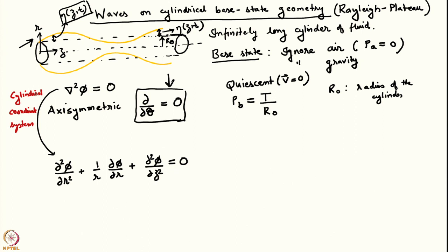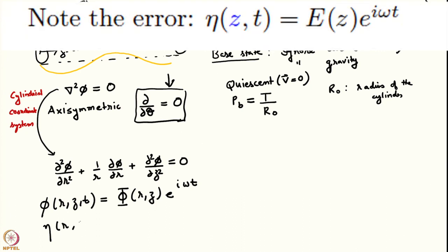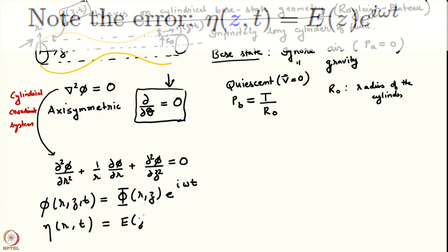We will solve the Laplace equation using our normal mode approximation: φ(r,z,t) = Φ(r,z)·e^(iωt), and η(z,t) = E(z)·e^(iωt). Substituting into the Laplace equation and using variable separation — separating the r-dependence from the z-dependence — and choosing the separation constant equal to +k², we obtain two ordinary differential equations for capital R and capital Z.